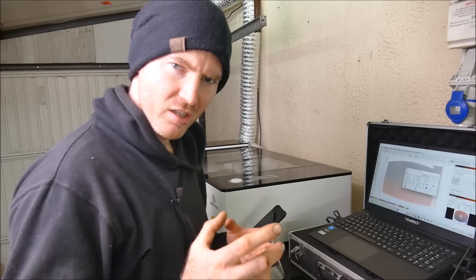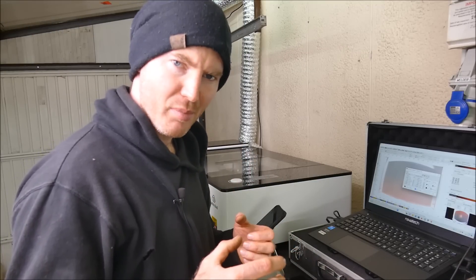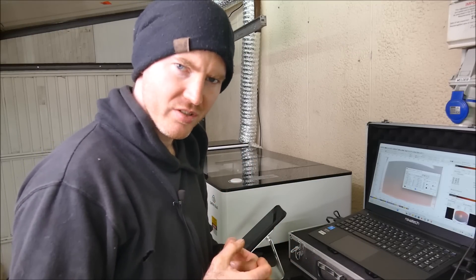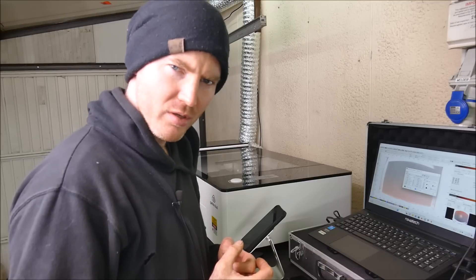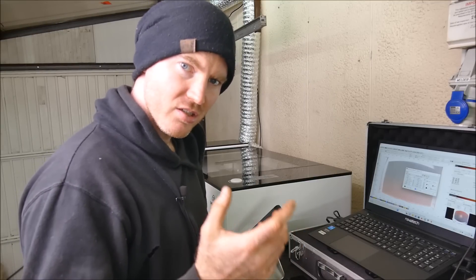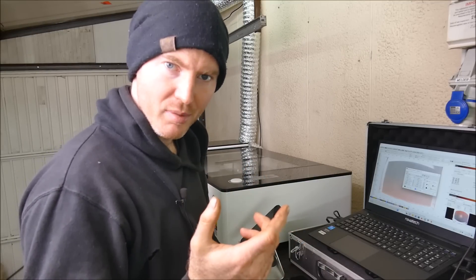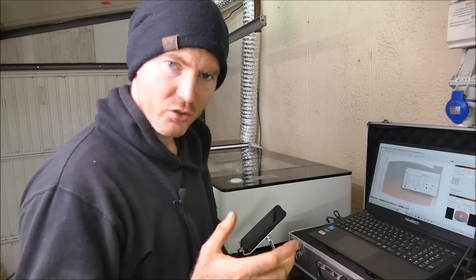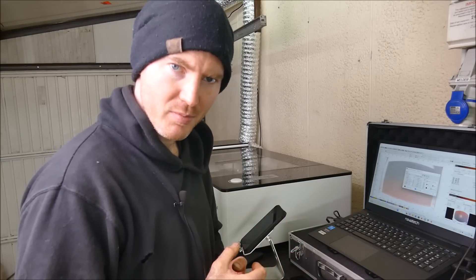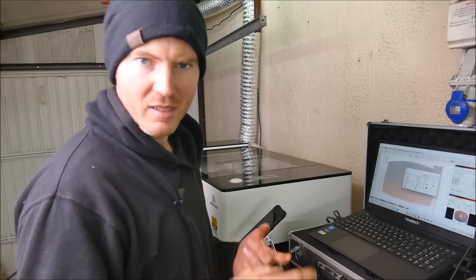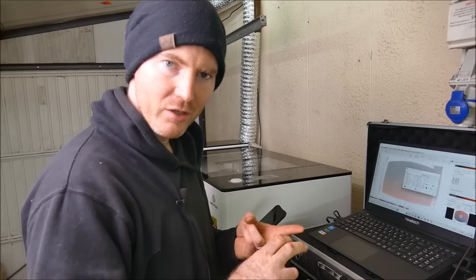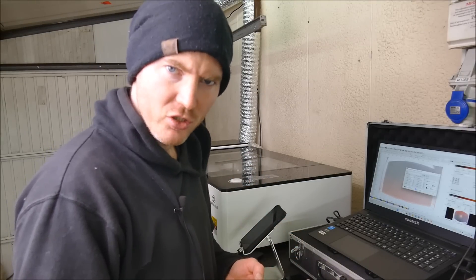Now another difference is the processing controller. CO2 lasers typically use a digital signal processor, a DSP, commonly known as RUIDA. Now diode lasers typically use Garble or GRBL. Now Garble is open source and readily available for most people. Now RUIDA is industrial standard. It's meant to be more reliable, more accurate, has more features and better control.